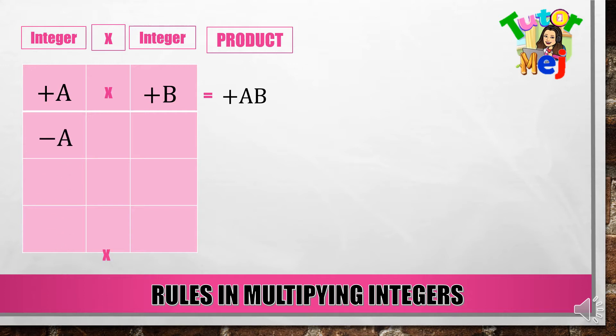Negative A times negative B. Ito ay equal to — negative times negative, ang result ay positive. Then multiply AB, so ang ating product ay positive AB.